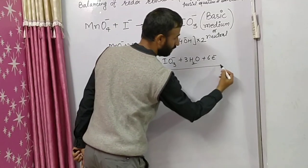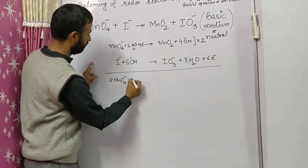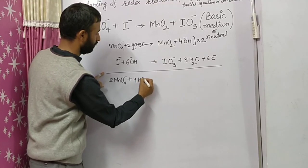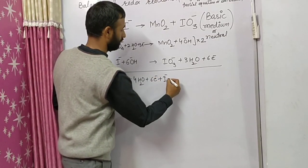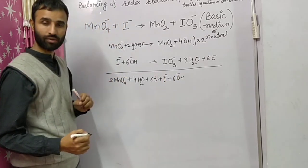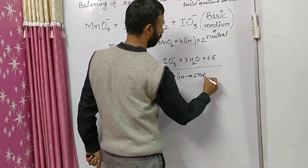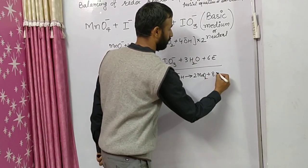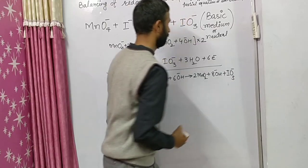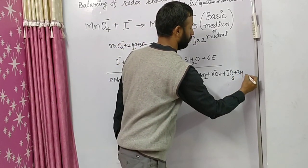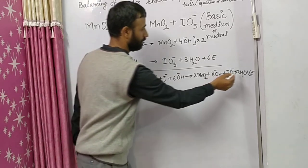Adding the two half-reactions: 2MnO4⁻ plus 4H2O plus 6 electrons plus I⁻ plus 6OH⁻ gives 2MnO2 plus 8OH⁻ plus IO3⁻ plus 3H2O plus 6 electrons. The six electrons cancel out on both sides.